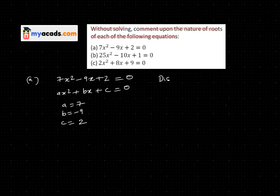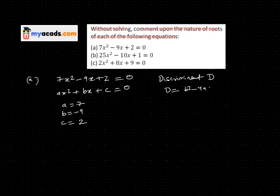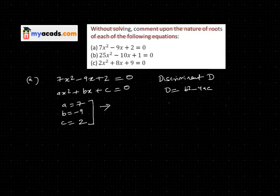Now for the nature of roots, I will find the discriminant. The discriminant D is b² - 4ac. Now I will put the values into this formula.